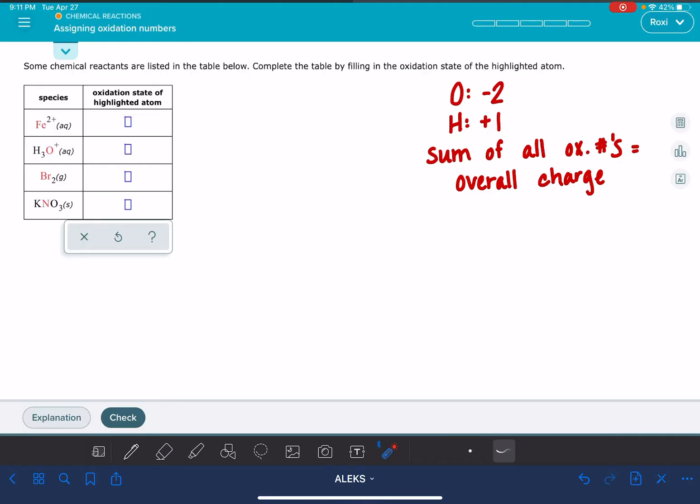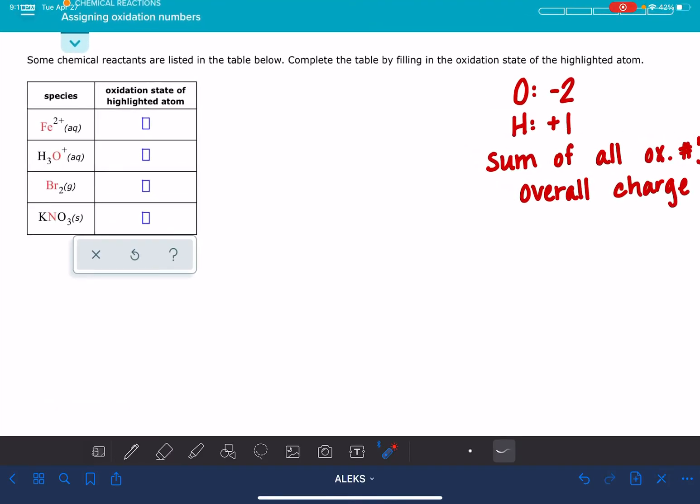If you have a monatomic ion, that means monatomic means one atom, and ion means charged. So if you have a monatomic ion, one atom all by itself, the oxidation number is the charge of that ion. So if we had something like Na+, the oxidation number would be plus one. If you had something like S2-, the oxidation number would be minus two.